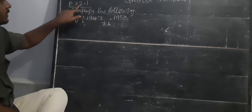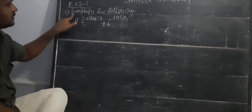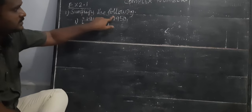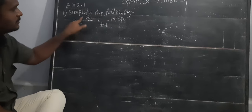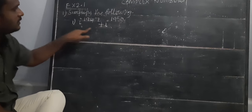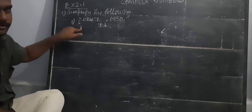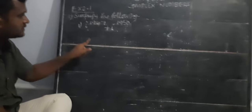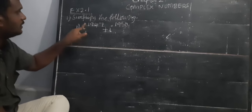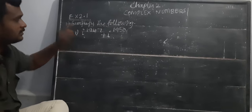Hi students, exercise 2.1, first sum. The topic is: simplify the following. How can we simplify this term? We need to bring it into the form of a complex number, which means x plus iy. So this value we need to apply is i power 1947.